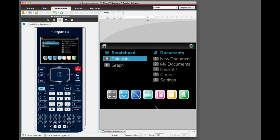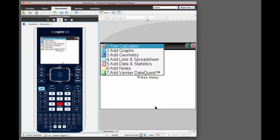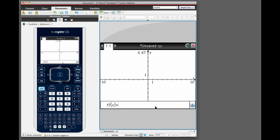So let's go home, one, and then select two for add a graph. Now we need a graph so let's go ahead and put in x squared plus two.